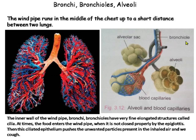Like in a tree, the branches divide and subdivide, but at the end of these branches are present leaves. Similarly, in our lungs also, at the end of the bronchioles are present alveolar sacs. Each alveolar sac has many alveoli.